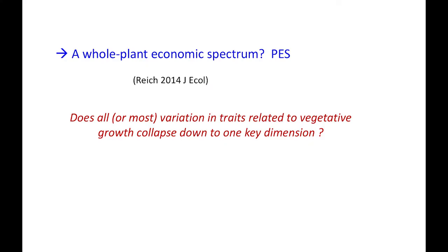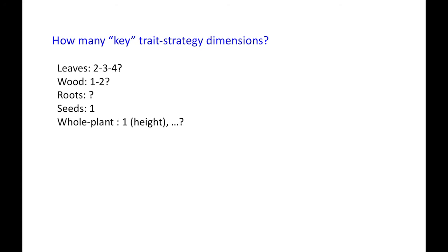This brings us to the question of whether there's a whole plant economic spectrum — there's a beautiful paper by Peter from a couple of years ago about that. At its heart is the question: does all or most variation in traits related to vegetative growth collapse down to a single dimension? This comes back to: how many key trait strategy dimensions are there? I'm interested in this theoretically, and modellers are interested from a 'make simple models' perspective. My tentative current view: two or three dimensions in leaves — Colin would say four — one or two in wood, and roots — we have no idea. I'm more confused about roots than when I came in a couple of days ago, and it's fantastic to see all this work happening. We don't know yet if there's a root economic spectrum or how orthogonal it is with other things.